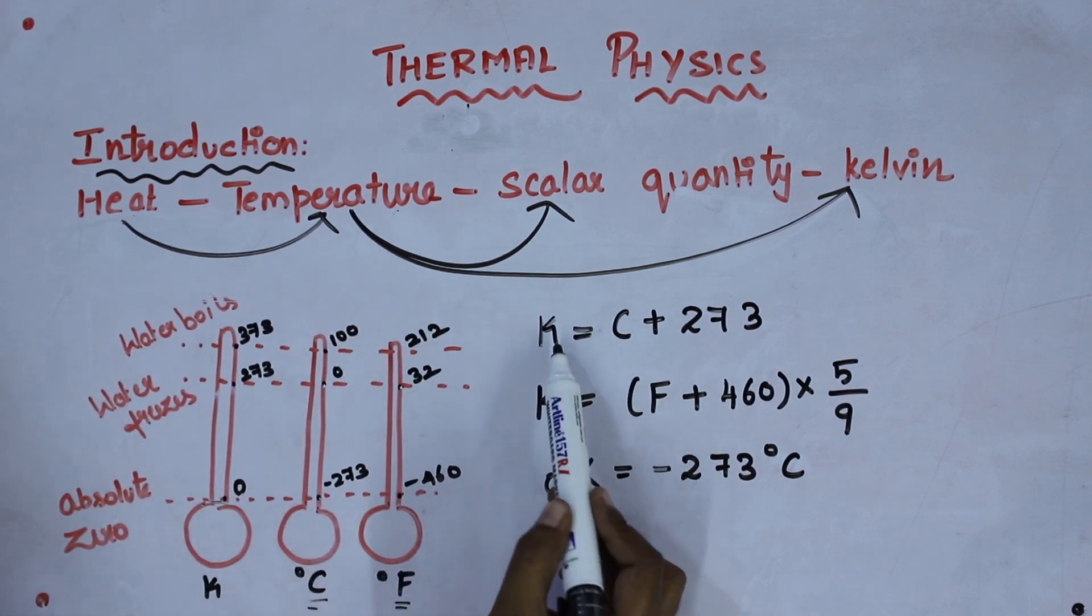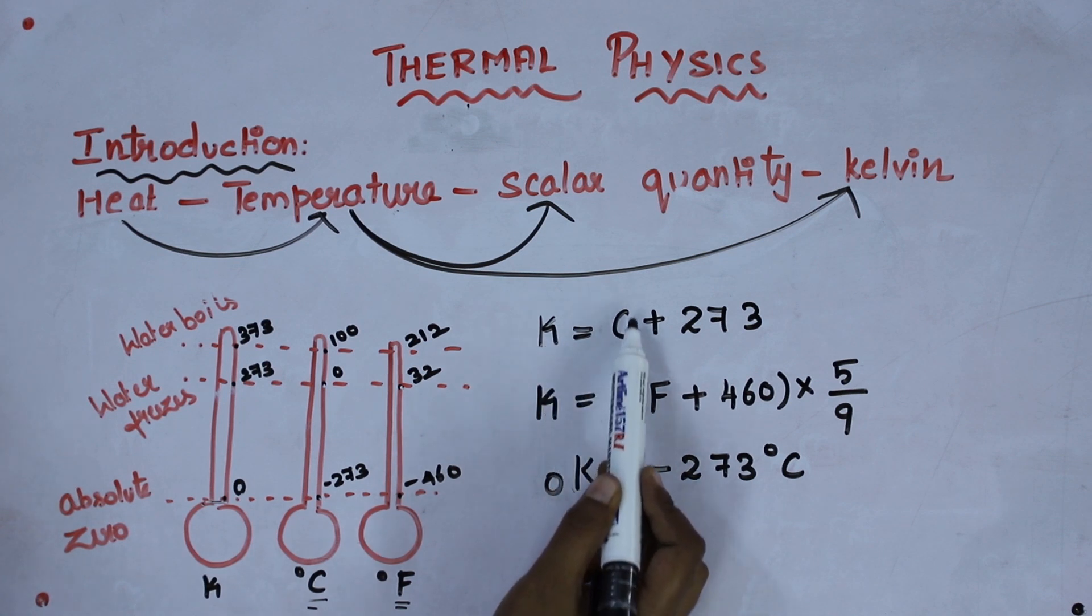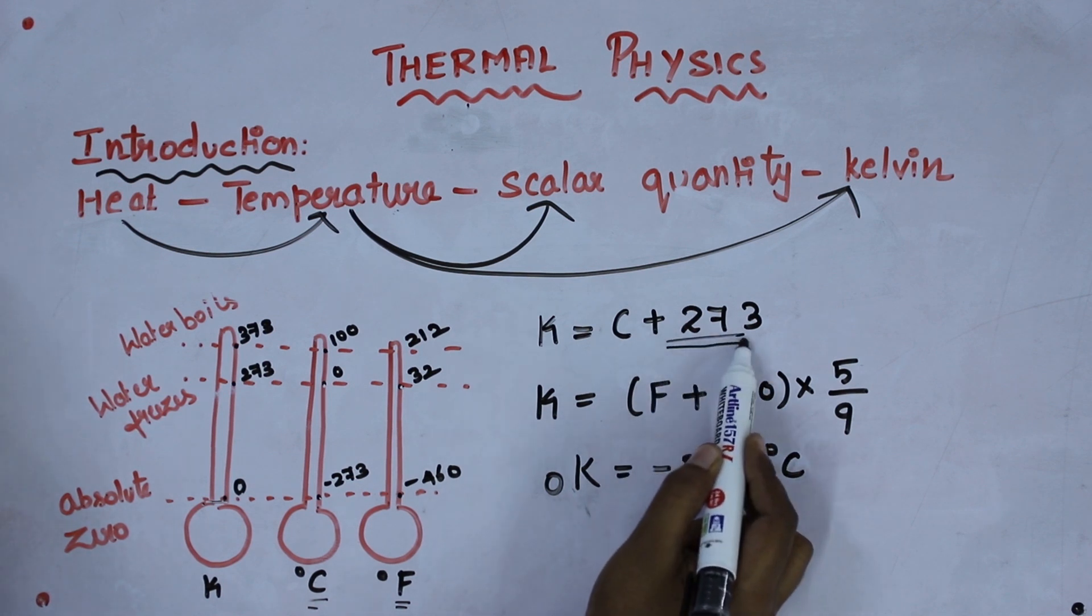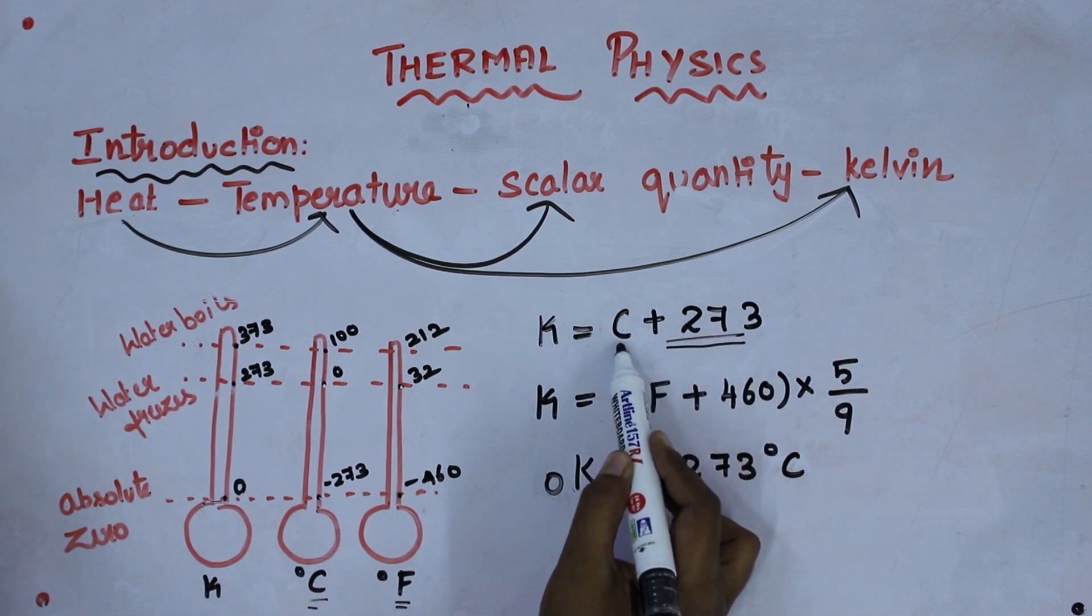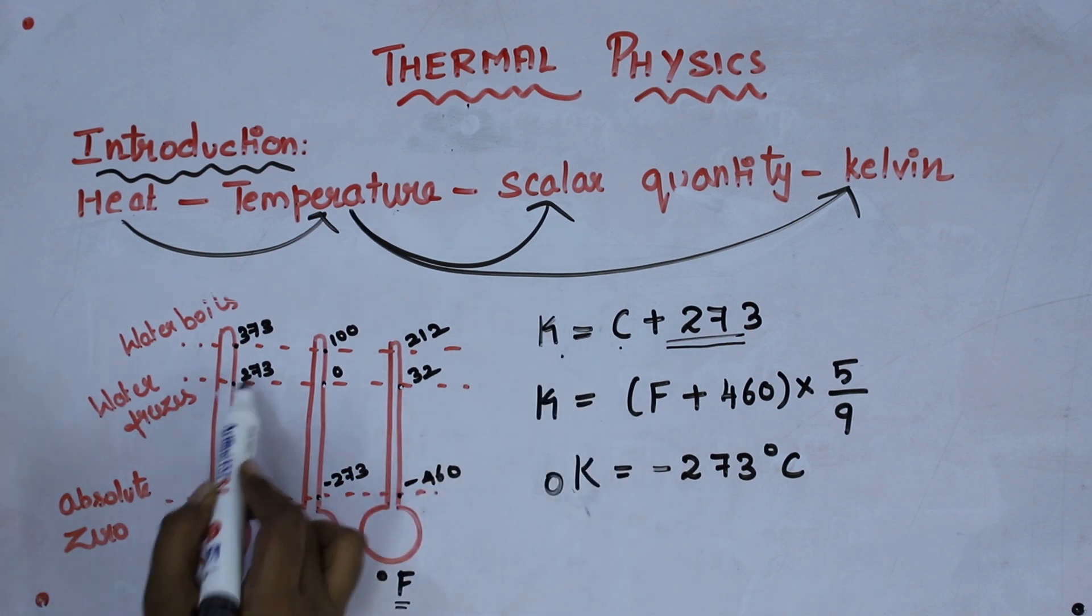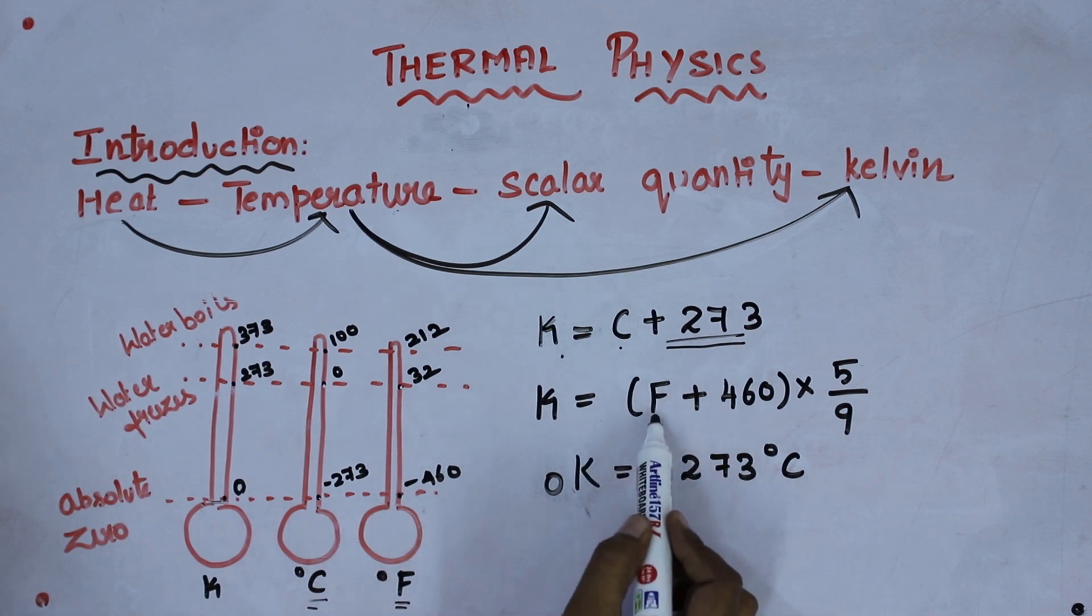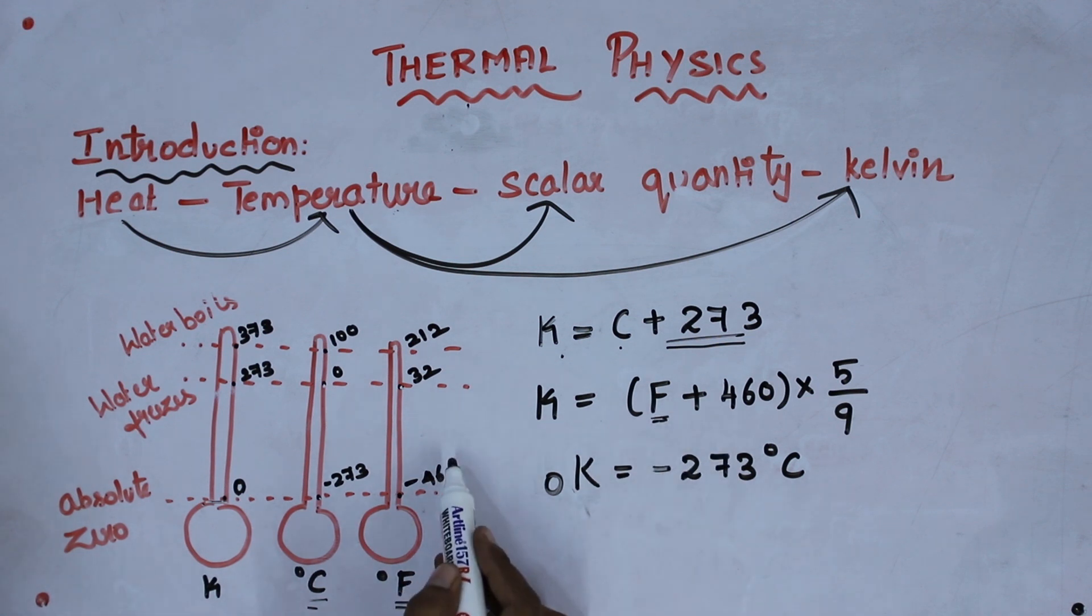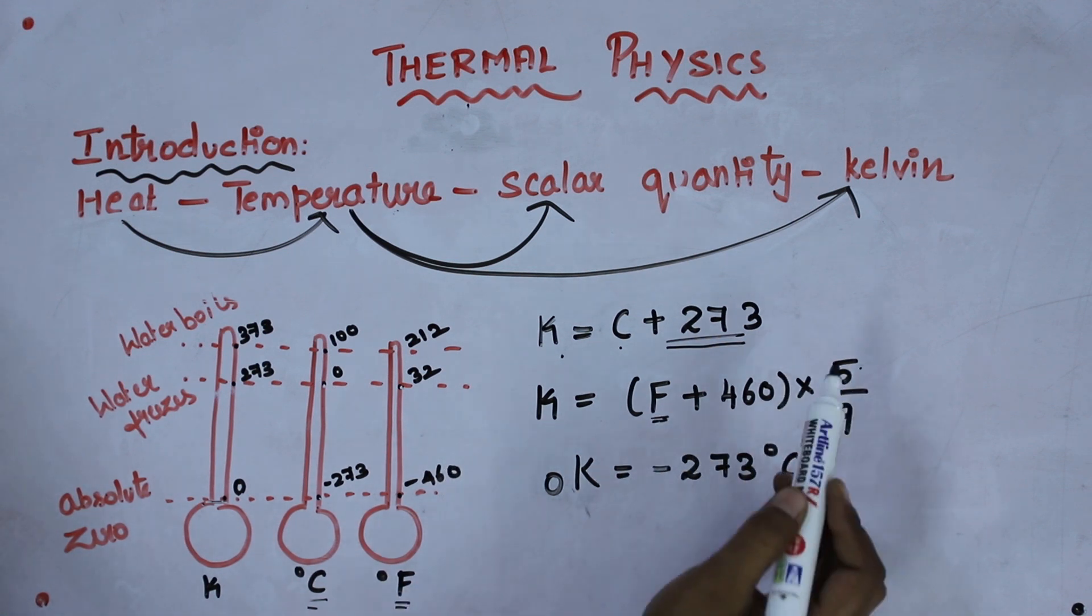I have written the formula here. If you have to find the Kelvin and they have given the value of Celsius, you have to add plus 273 with the value of the Celsius, you will get the value of the Kelvin. That is the difference 273. And if they have given the value of Kelvin, the formula is F plus 460 times 5 by 9.